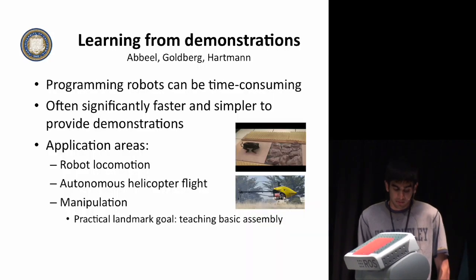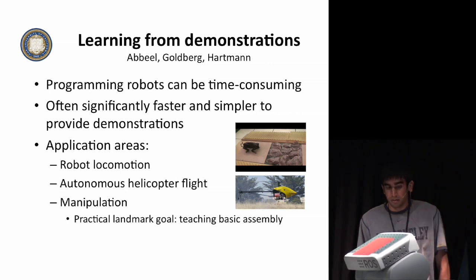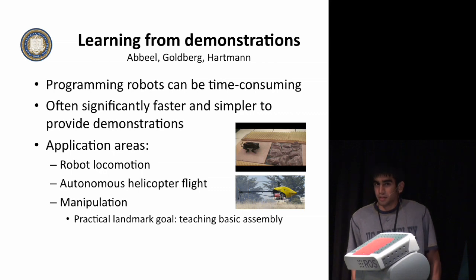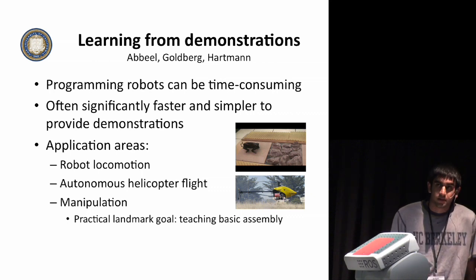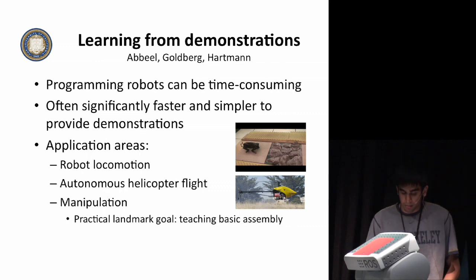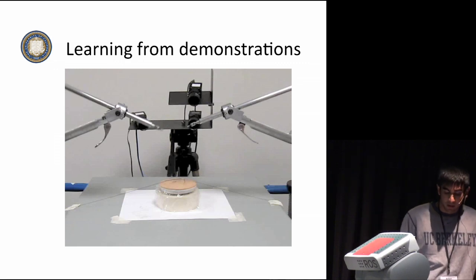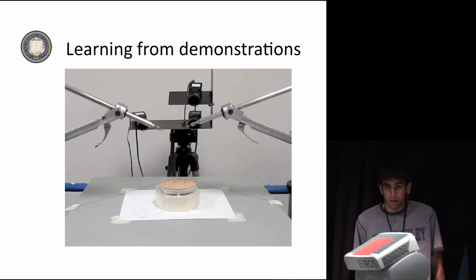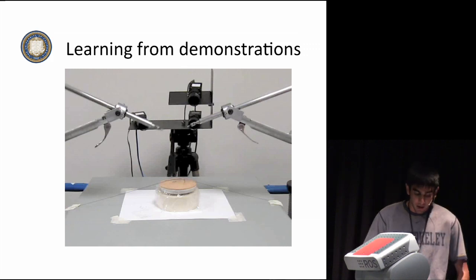The last main focus we have is learning from demonstration. Programming robots is time-consuming, and it can often be faster to just provide a demonstration of a task rather than explicitly programming a robot to perform it — and sometimes it's not even clear how to program the robot to do so. We've developed methods that enabled us to teach a robot dog to cross difficult terrains and autonomous helicopters to perform expert-level aerobatics, well beyond the capabilities of any other autonomous helicopter. We plan to extend these methods and apply them to manipulation. We started working on this in the area of surgical robotics, where one of the more tedious tasks in laparoscopic surgery is tying knots. The resulting trajectory is both smoother and faster than the provided demonstrations.